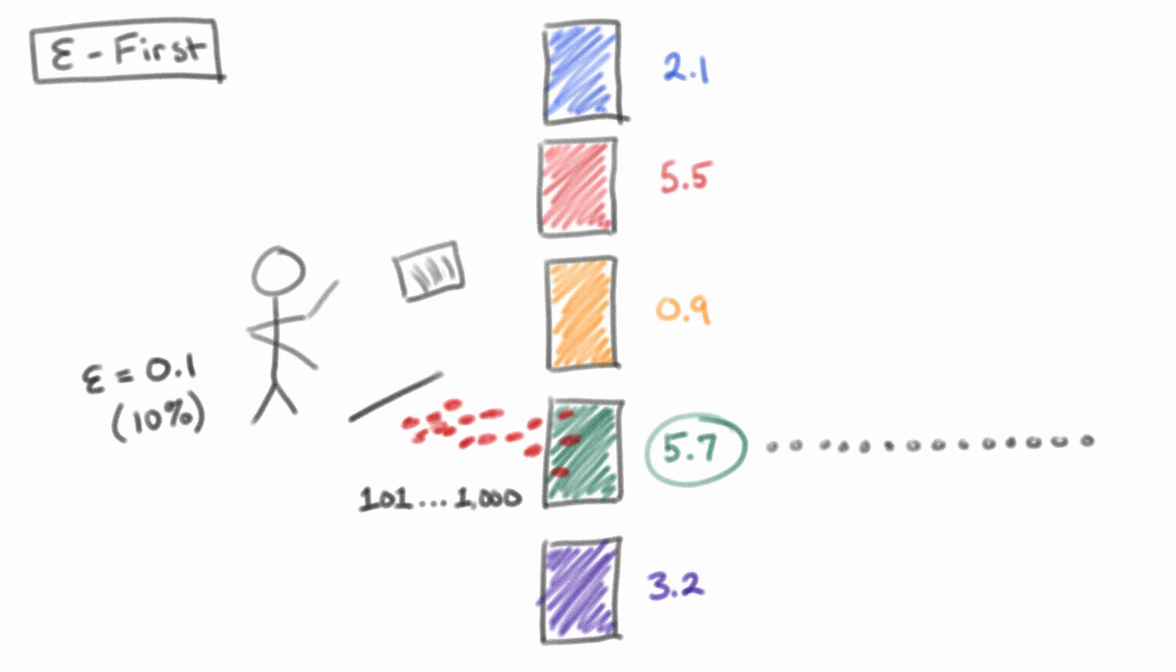In this case, we have addressed our dilemma by dividing our run into an exploration phase followed by an exploitation phase. Our hope is that we chose an epsilon that is large enough to gather enough information to accurately reveal the winner, but small enough that we don't waste too much in exploring before switching to the exploitation phase.